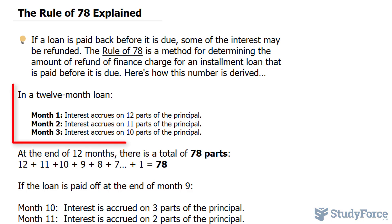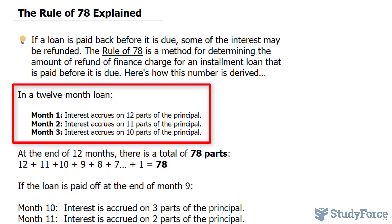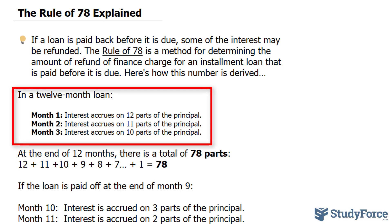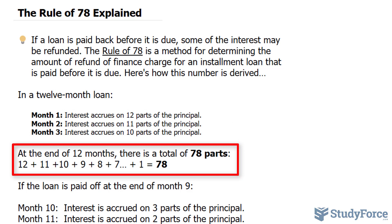In a 12-month loan, in the first month, interest accrues on 12 parts of the principal. And this goes down every month after that — in month 2 it's 11 parts, in month 3 it's 10 parts. If you sum all these up all the way to 12 months, you end up with 78 parts altogether.